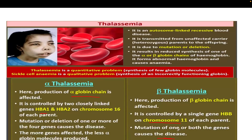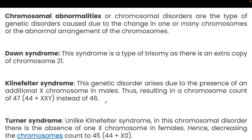The second type of disorder is chromosomal disorder — caused by changes in one or many chromosomes at the chromosomal level, not just the gene level. The example is Down syndrome, which is a type of trisomy where there is an extra copy of chromosome number 21. Remember: in exams, Down syndrome is associated with chromosome number 21.